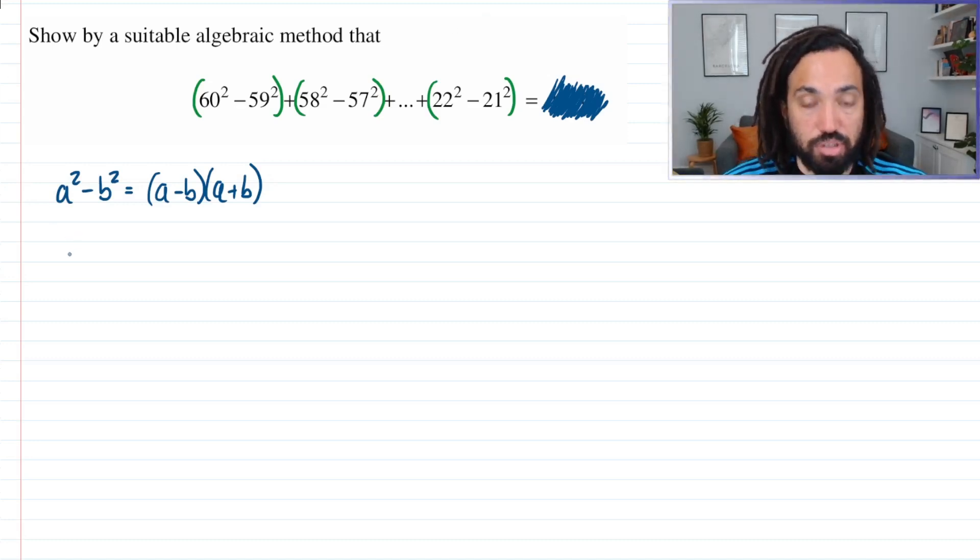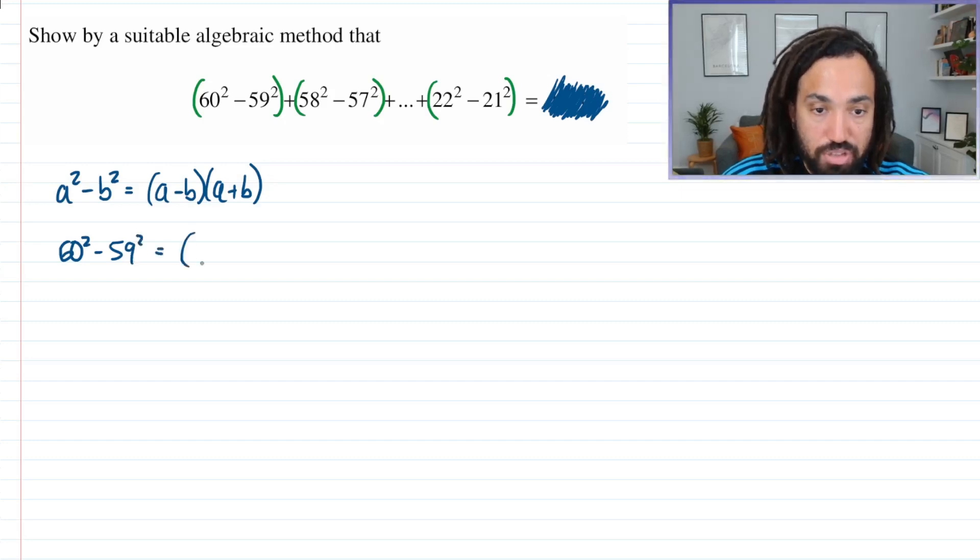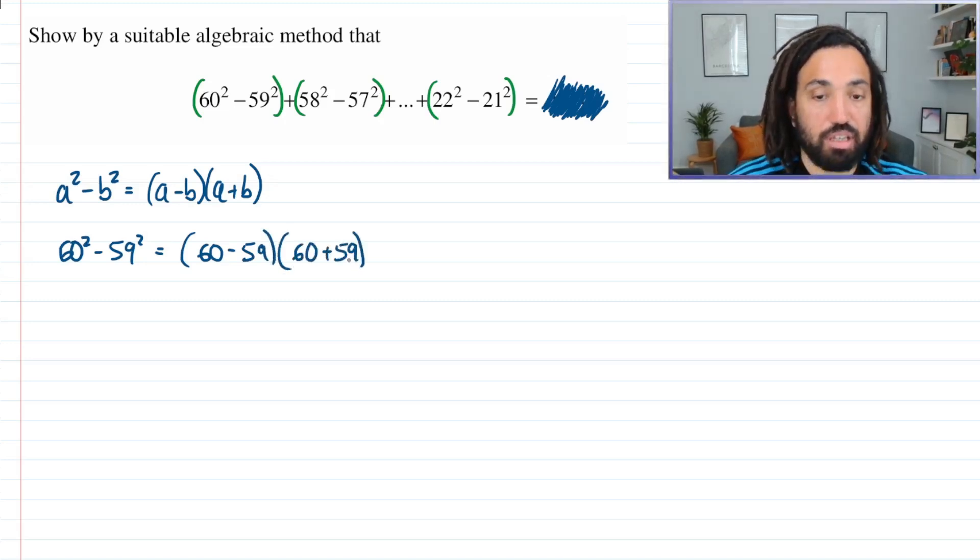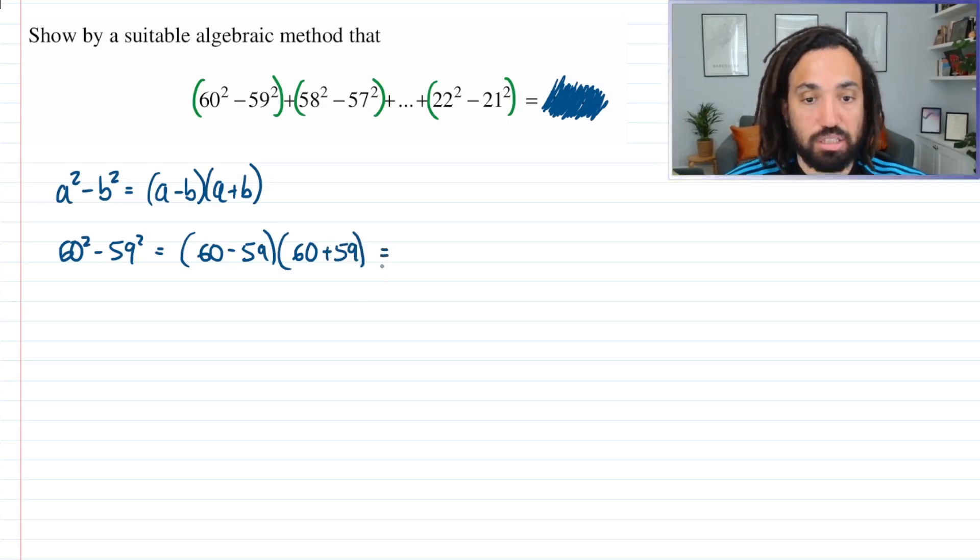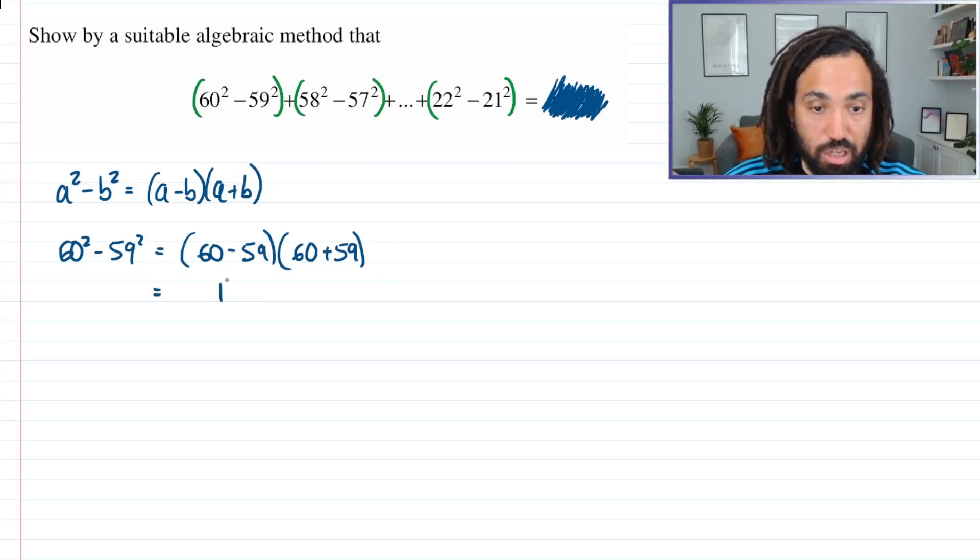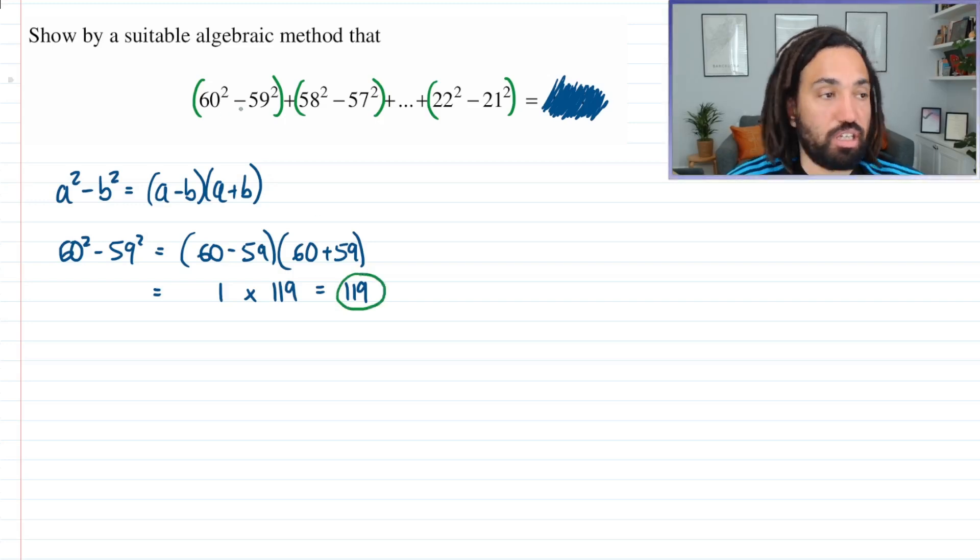It's always a good idea to evaluate some of the series in order to understand what the pattern is. So if I'm going to be doing 60² - 59² and I'm using difference of two squares, I'm going to do (60 - 59)(60 + 59), and this is going to give us 1 times 119, so we get 119 as our first value of this pair here.